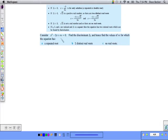Next example, consider this: x squared minus 2x plus m equals 0. Find the discriminant and hence find the values of m for which the equation has a repeated root.